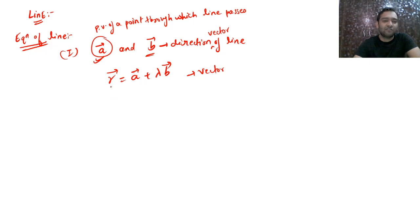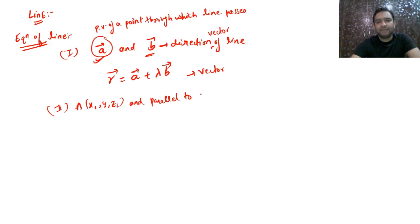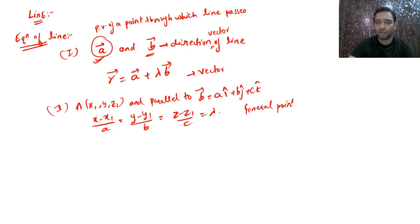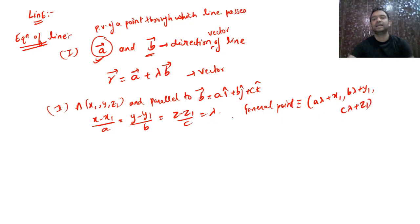In Cartesian (partition) form: if the point is (x₁, y₁, z₁) and the line is parallel to **b** = aî + bĵ + ck̂, then the equation is (x − x₁)/a = (y − y₁)/b = (z − z₁)/c = λ. The general point on the line is (aλ + x₁, bλ + y₁, cλ + z₁). This was the first form of the equation of a line.